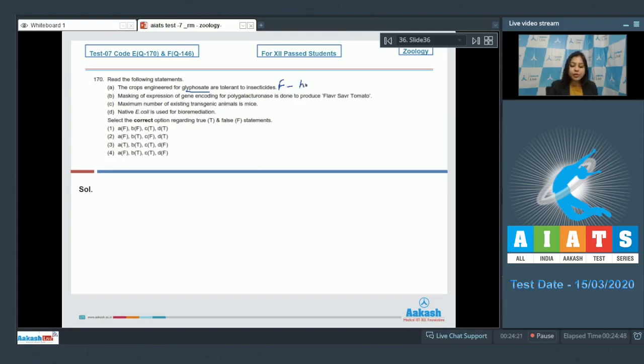Statement two, masking of expression of gene coding for polygalacturonase is done to produce flavor savr tomato. This is a true statement, as polygalacturonase is not produced in flavor savr tomato. This polygalacturonase was responsible for early ripening of tomato.